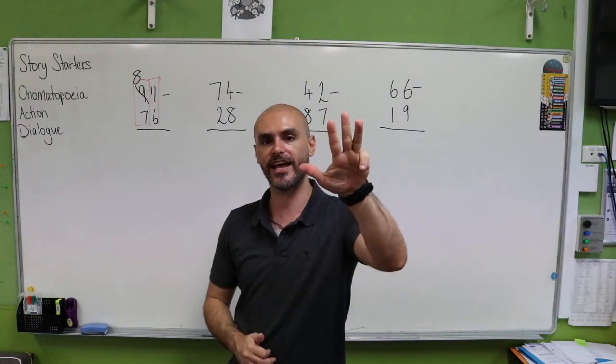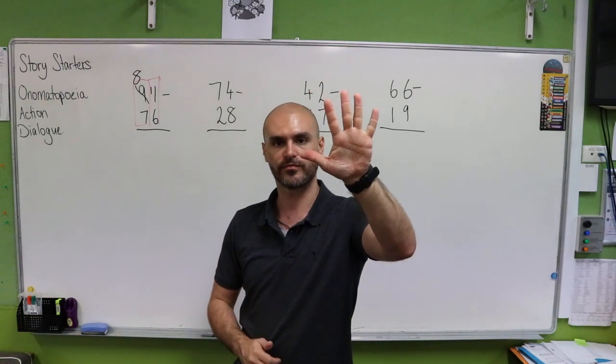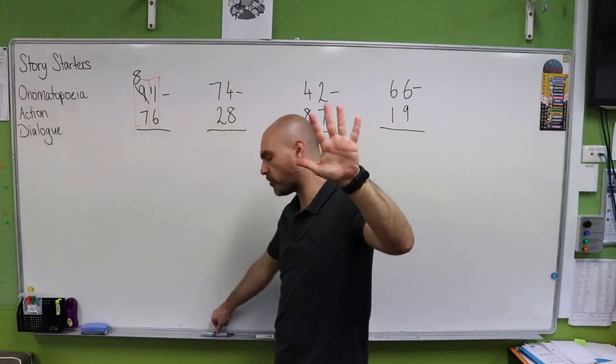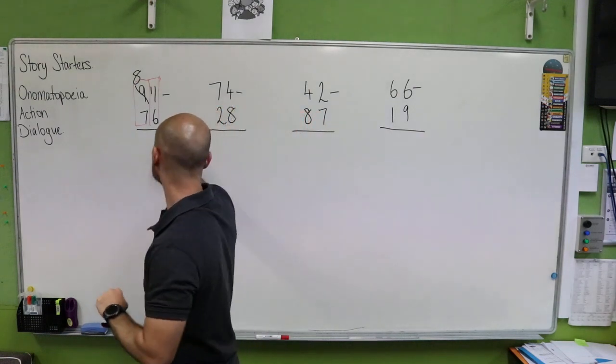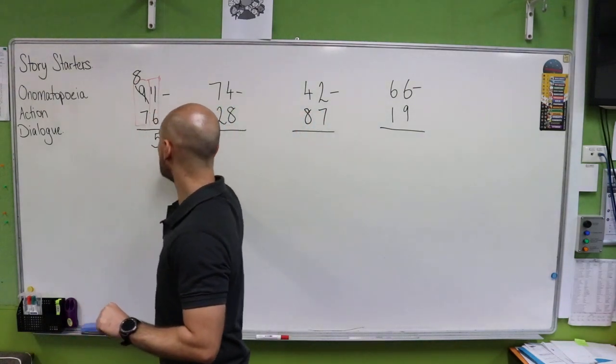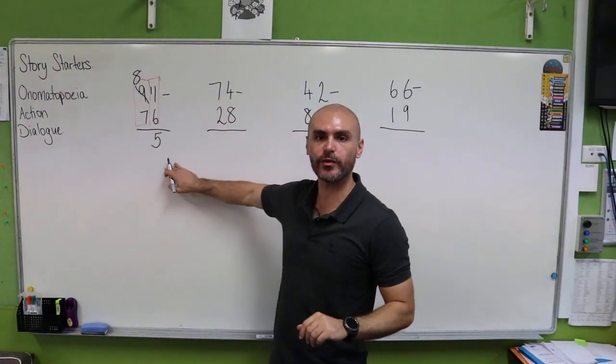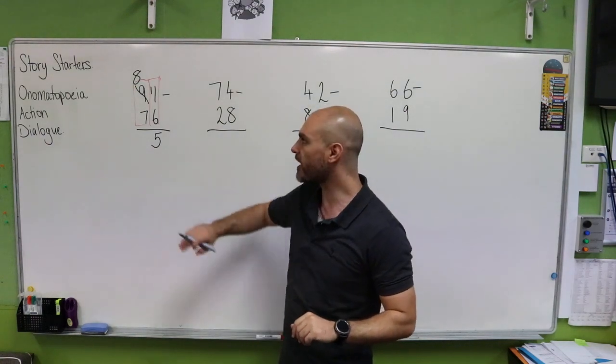nine, 10, 11. How many did it take for us to get to 11? Five. So keeping it all in line with our units column, we write our answer of five.